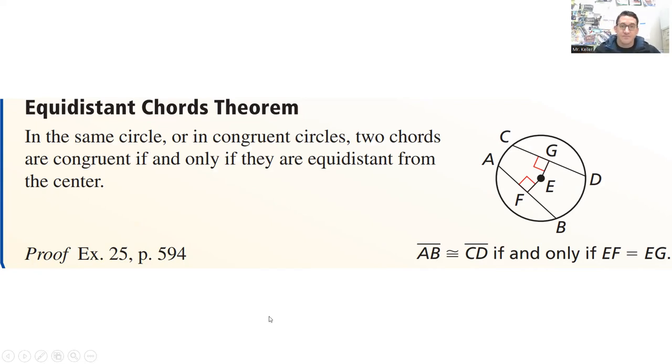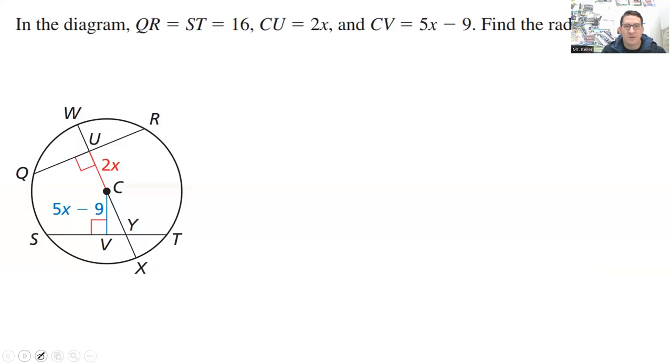Do we have anything else? Oh, we do have more stuff. Great. In the semicircle or congruent circles, two chords are congruent if and only if they are equidistant from the center. So what this is saying, if you have two congruent chords, then the distance here, the distance from the center, this is going to be congruent to this. And then vice versa, if the distance from the center is congruent, then these parts are all going to be congruent. So let's look at how this works.